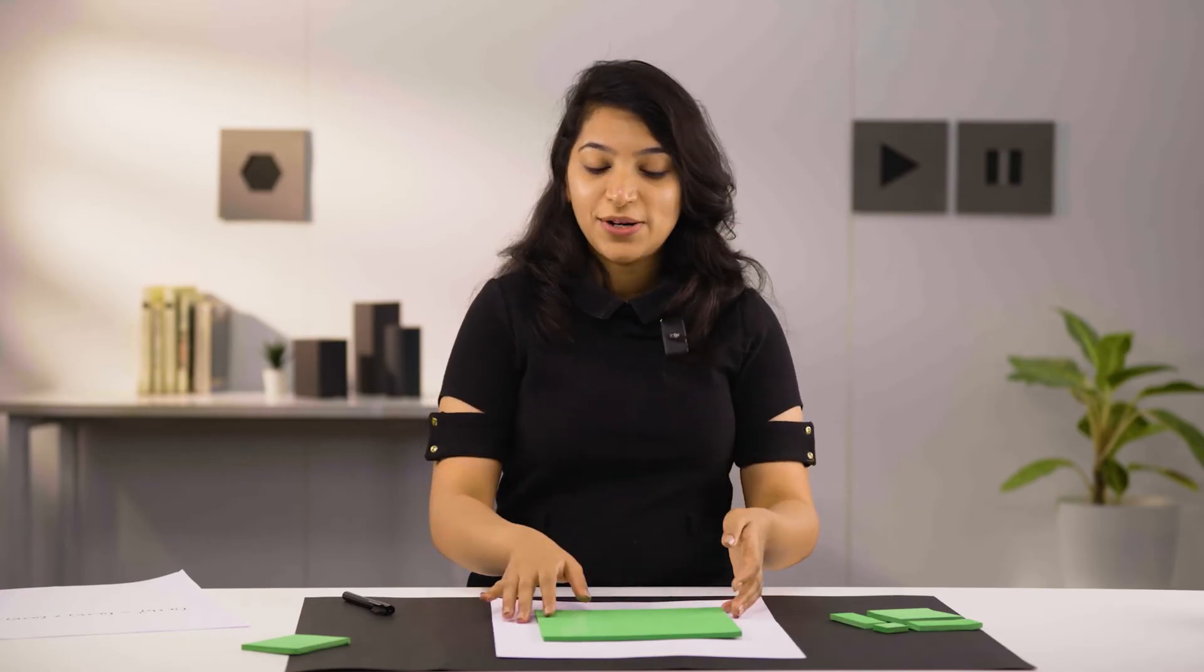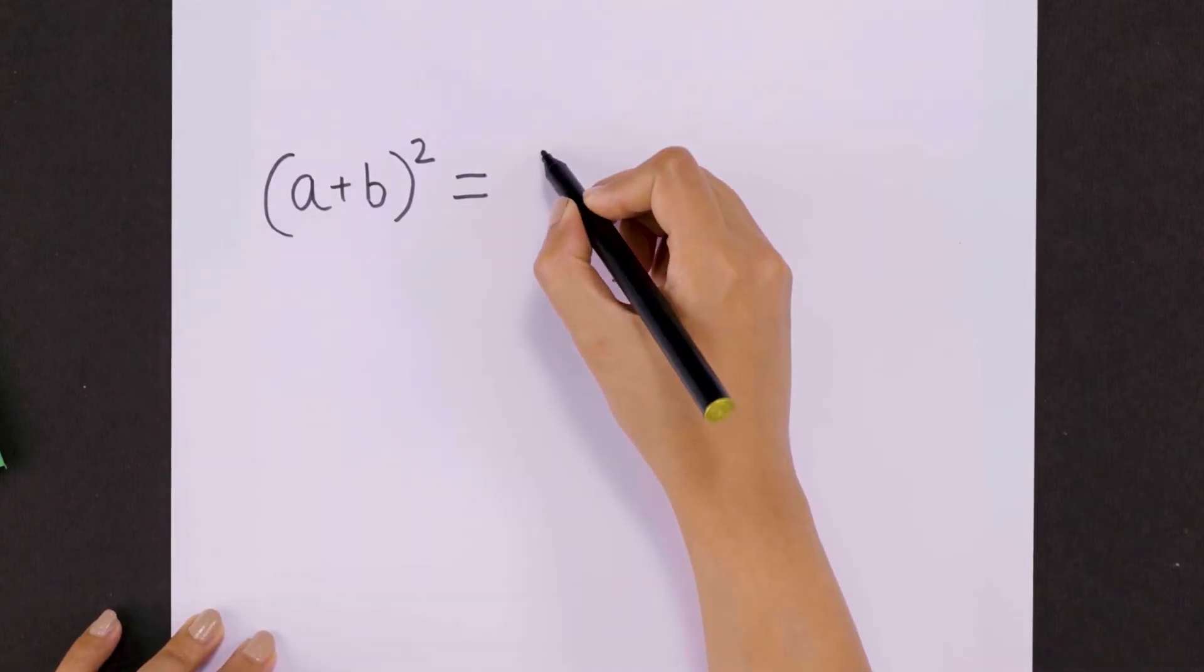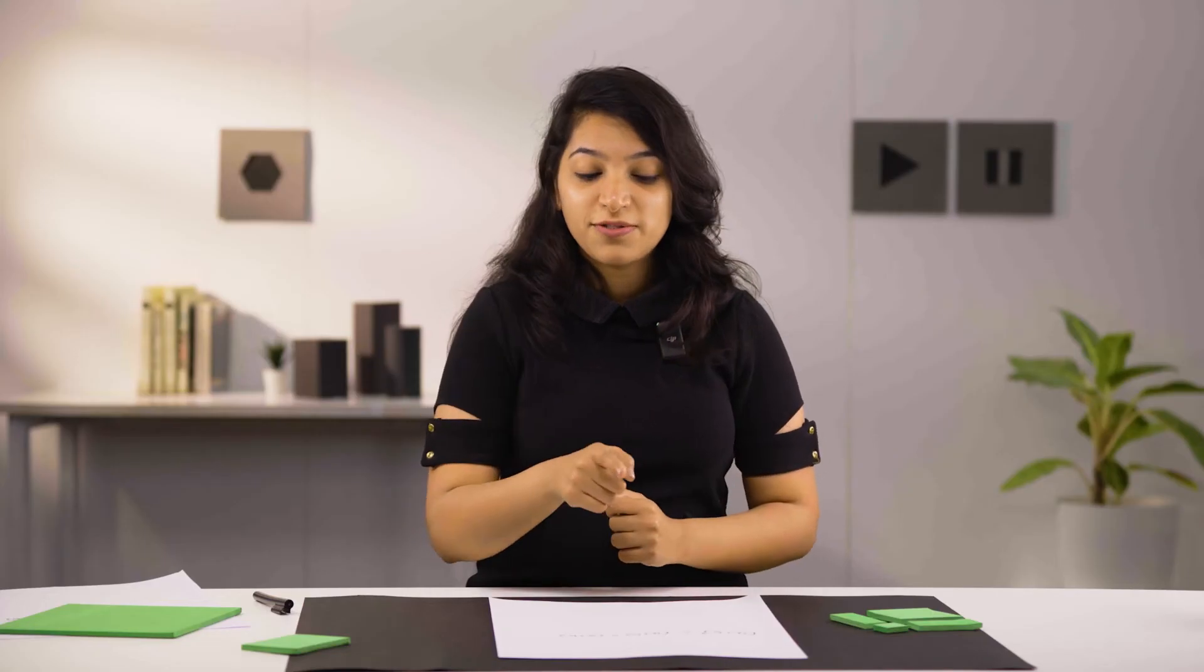There's another way we can look at it. a plus b whole squared is actually a plus b times a plus b. To find the product of these two brackets,